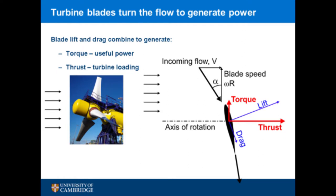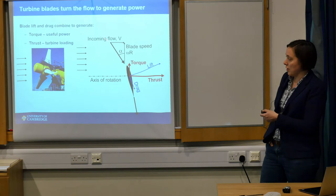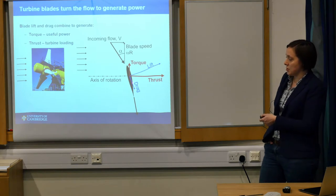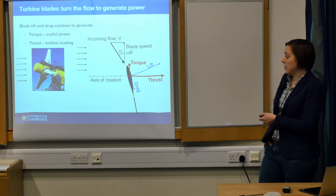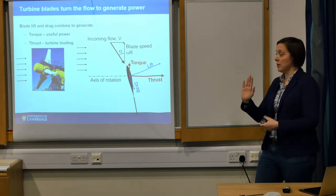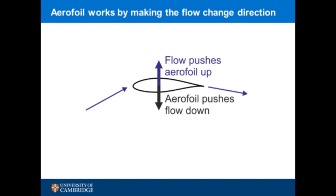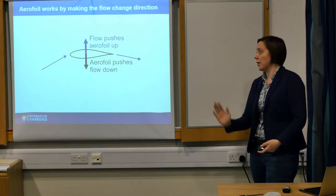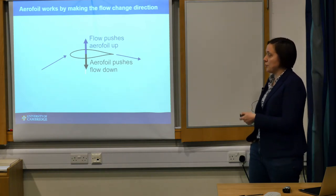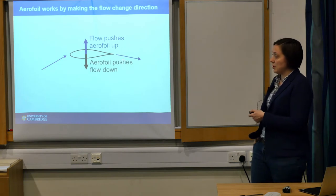The turbine has got three blades which rotate. As they rotate, they're aerofoils — the flow comes in at one angle and leaves at another, which generates lift and drag. As far as the turbine is concerned, that's torque, which pulls the blades around to generate power, and thrust, which is a backwards bending loading on the blades and the support structure — an inevitable consequence of generating power. All an aerofoil does is force the flow to change direction; the flow pushes the aerofoil up and the aerofoil pushes the flow down.